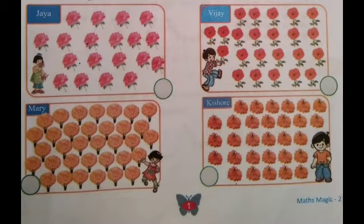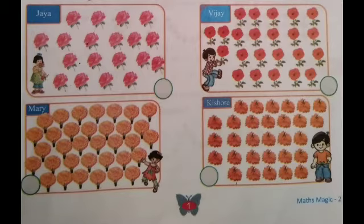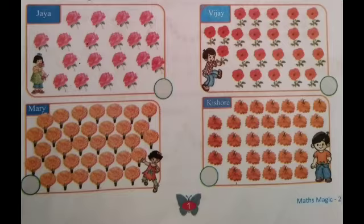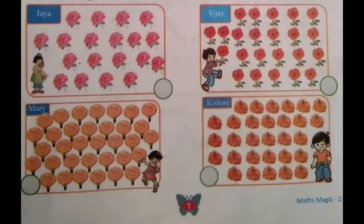Now see how many flowers Vijay counted. Count: 1, 2, 3, 4, 5, 6, 7, 8, 9, 10, 11, 12, 13, 14, 15, 16, 17, 18, 19, 20, 21, 22, 23.